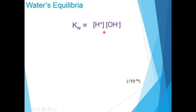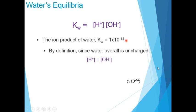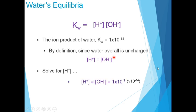The product of the concentration of H⁺ and OH⁻ ions is equal to Kw, or the ion product, which we derived as 1×10⁻¹⁴. By definition, since water overall is uncharged, the concentration of H⁺ ions equals the concentration of OH⁻ ions. Solving for H⁺, we get that [H⁺] = [OH⁻] = 1×10⁻⁷.